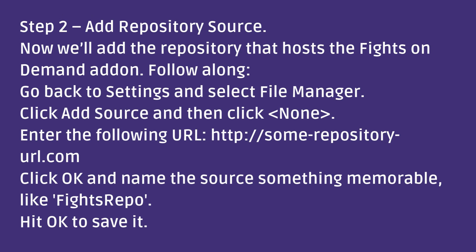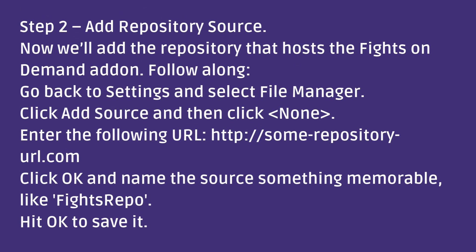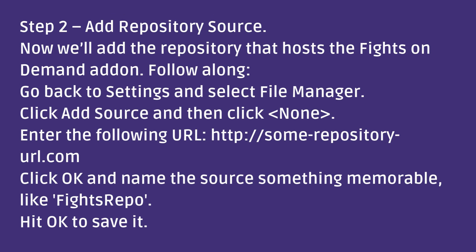Step 2: Add repository source. Now we'll add the repository that hosts the Fights on Demand add-on. Follow along — go back to settings and select file manager. Click add source, then click the angle brackets and enter the following URL: sumrepositoryurl.com. Click OK and name the source something memorable, like "Fights repo." Hit OK to save it.